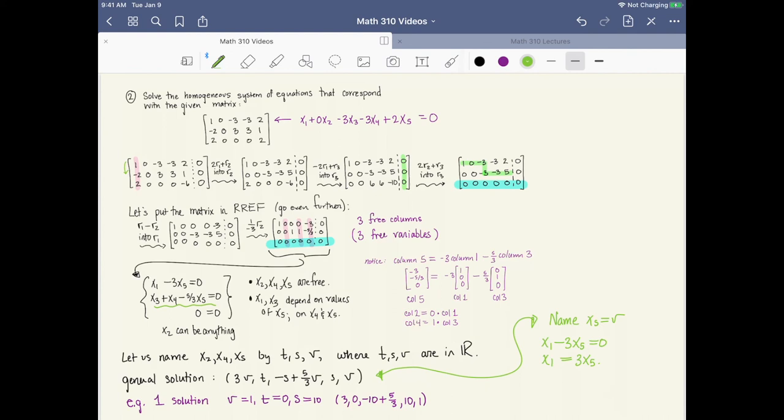So when I go over here and look at my general solution, the fifth entry which corresponds to x5 is v, and the first entry which corresponds to x1 is 3v.